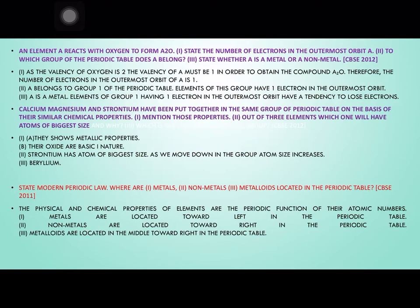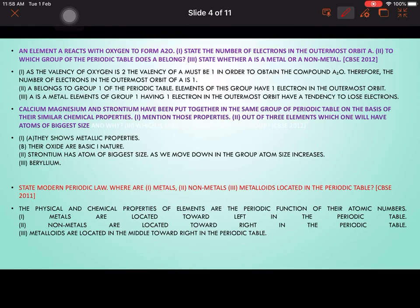An element A reacts with oxygen to form A₂O. Since oxygen has valency 2 and the formula is A₂O, the valency of A must be 1. Therefore, 2 atoms of A combine with 1 oxygen atom. The number of electrons in the outermost orbit of A is 1. A belongs to group 1 of the periodic table. A is a metal, as elements with one electron in the outermost shell have a tendency to lose electrons.